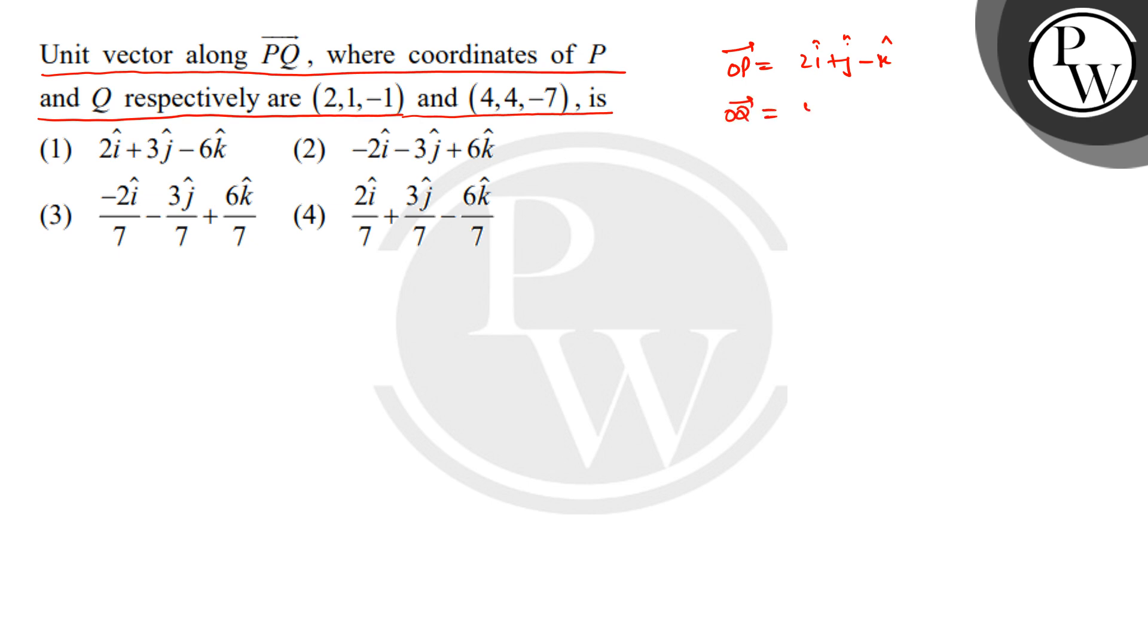The position vector OQ, which is given, is 4i + 4j - 7k. Therefore, PQ vector equals OQ